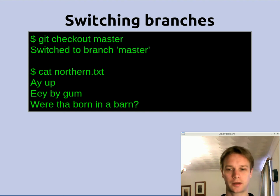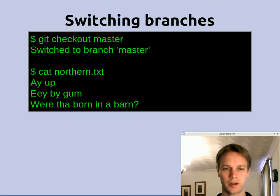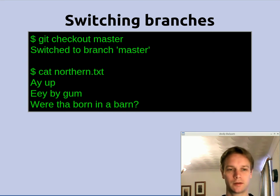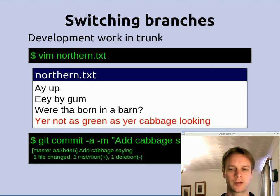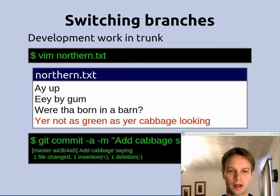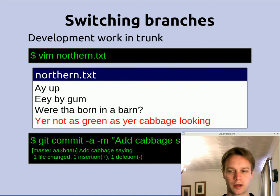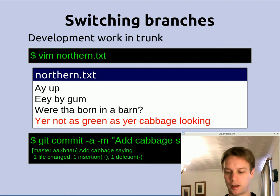So let's do that: git checkout master switches back to the master branch. And if we print out the contents of northern.txt now, even though we've just edited it and changed the spelling of 'ebargum', we've got the old spelling here. That's because we switched to the master branch, and what that did was actually change the contents of our working tree to match what's going on in the master branch. Now let's imagine we're doing some general development work in our master branch — we're going to add a new saying at the bottom, then do a git commit. Notice that the message Git gives us after the commit tells us we're on branch master.